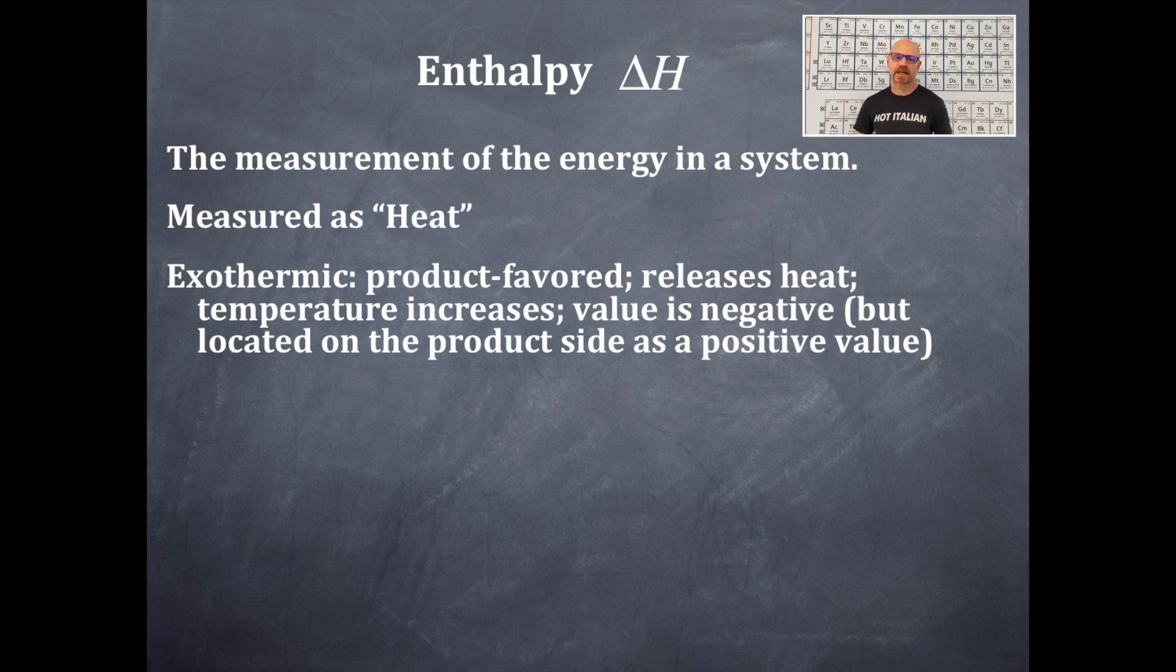If it is exothermic, then it's product favored. It releases heat, the temperature increases, and the value is negative for the delta H, but the delta H value, if you have a value, it's located on the product side as a positive value.